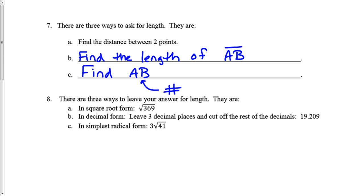And here we have the three ways to leave your answer for length. We can leave it in square root form. Just put a square root right over that number and you can leave it alone. You can have it in decimal form. If you're going to do it, you must leave three decimal places and then cut the rest of the decimals off, which means you're truncating. I don't want you to round, so please don't round. Or we can leave it in simplest radical form if you recall how to do that from Algebra 1. Any of these three ways are acceptable. So please be sure to bring your questions to class, and I hope you have a wonderful evening. Thanks.